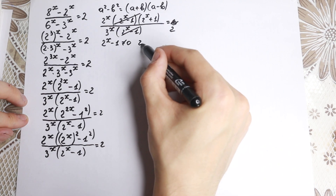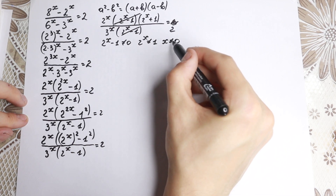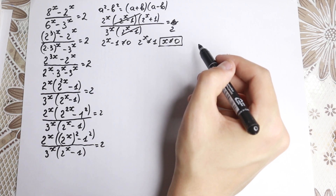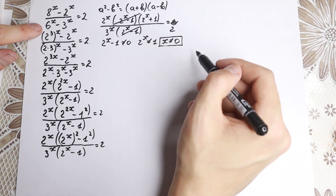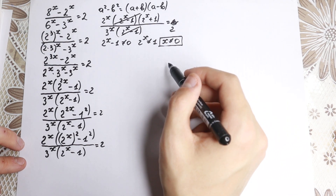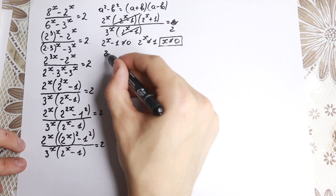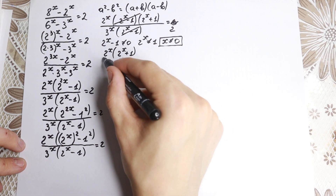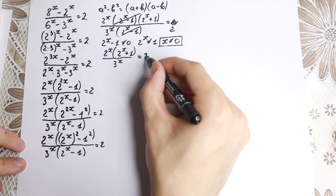Before canceling, we must note that 2 to the x minus 1 is not equal to 0, meaning 2 to the x is not equal to 1, so x is not equal to 0 — and we reject x = 0. After canceling, we have 2 to the x times (2 to the x plus 1) all over 3 to the x, equal to 2.